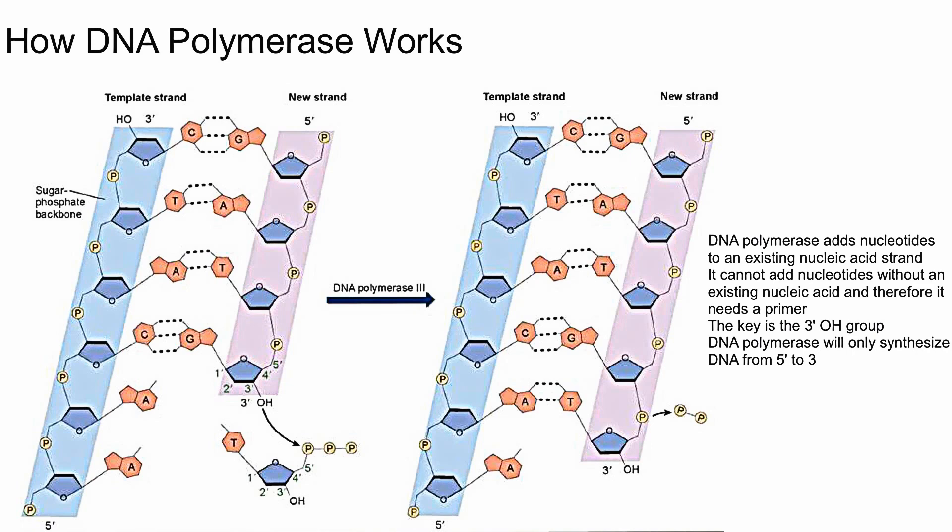Because DNA polymerase can proofread, it eventually adds up to be about one mistake for every one billion bases added. That's extremely important so your genetic information is kept the same and so cancer doesn't develop, for example.